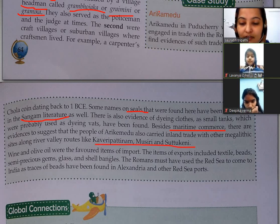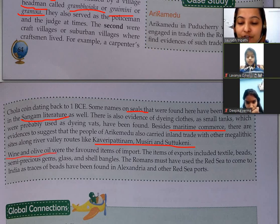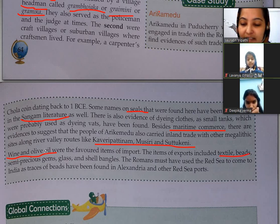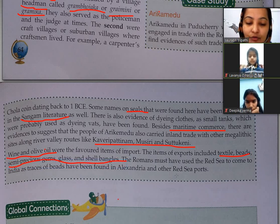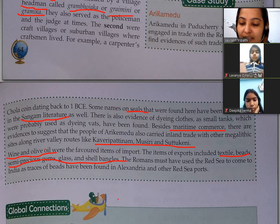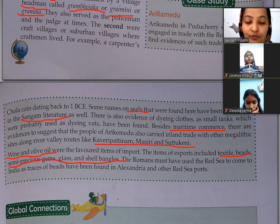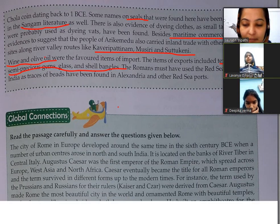Wine and olive oil were favored items of import. Items of export included textile, beads, semi-precious gems, glass, and shell bangles. The Romans must have used the Red Sea to come to India, as traces of beads have been found in Alexandria and other Red Sea ports.